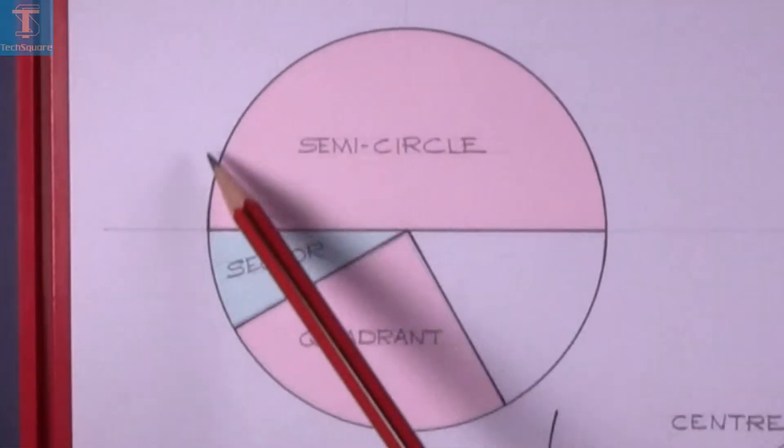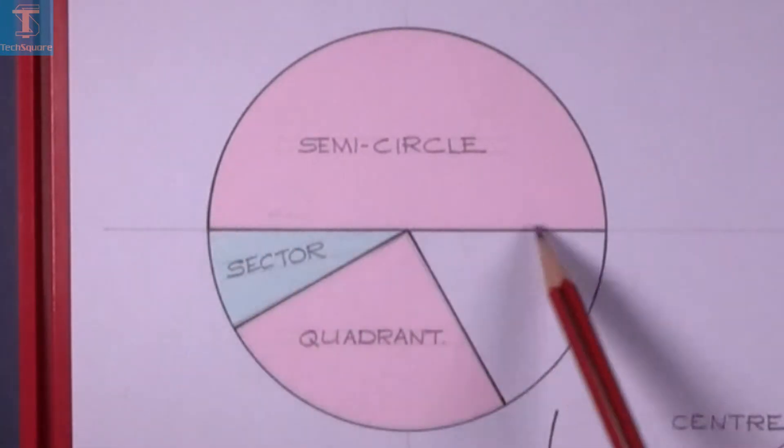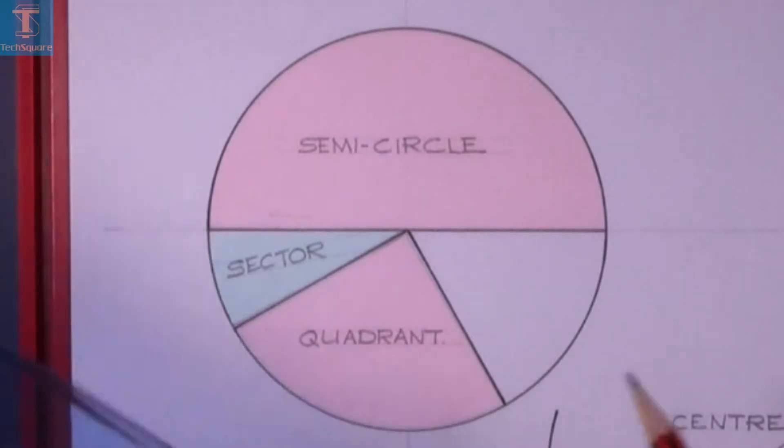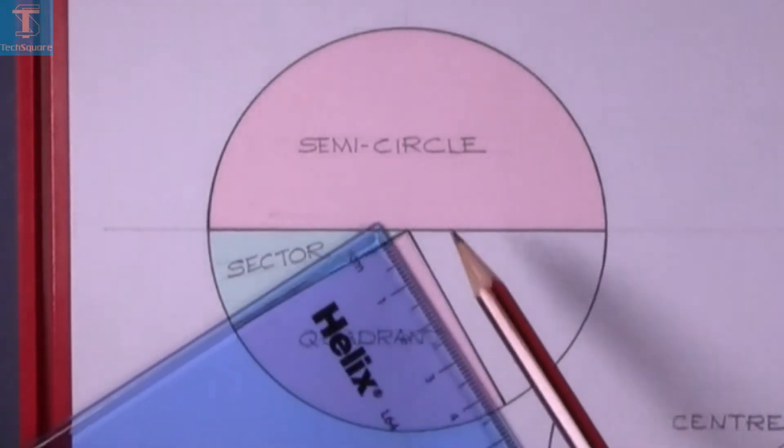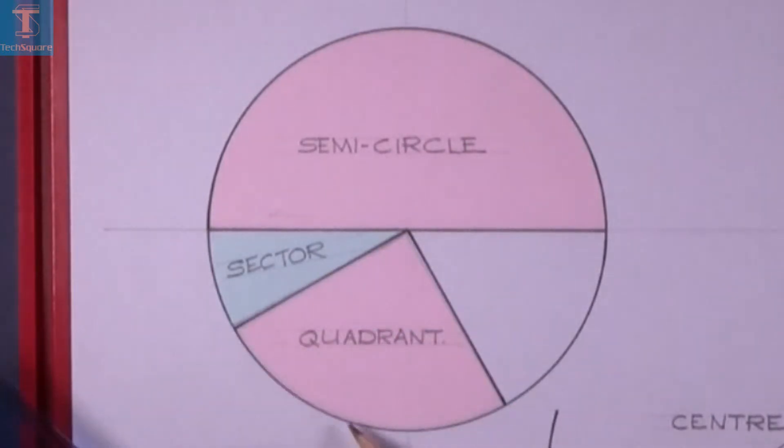Over here we have a semicircle, which is half of a circle. And down here we have a quadrant, which is where there's two radii at 90 degrees to each other with part of the circumference on the outside.